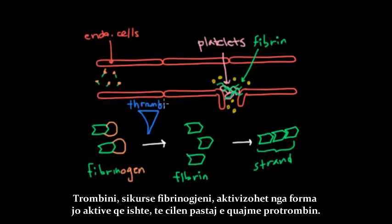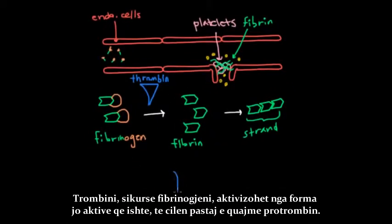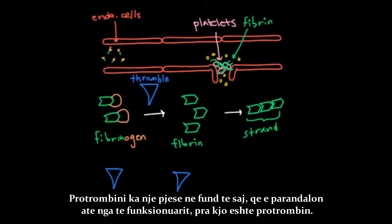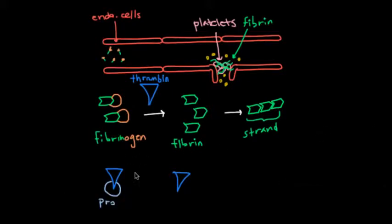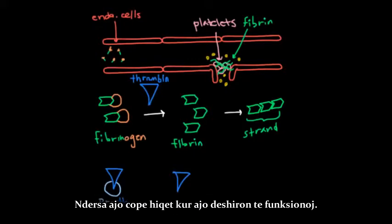And thrombin, just like fibrinogen, is activated from an inactive form which we call prothrombin. And the prothrombin has a little piece on the end that prevents it from working. So this is prothrombin. And that piece is removed when you want to get to work.